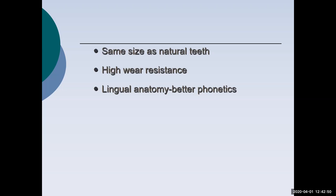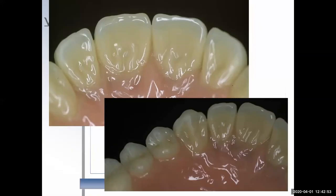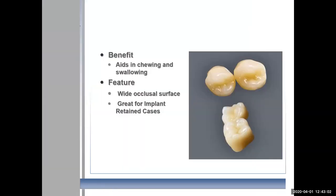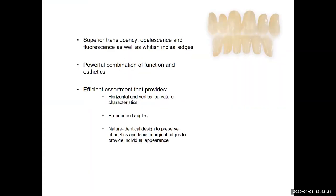I like to utilize lingual anatomy for better phonetics on these cases, since patients sometimes have issues with phonetics especially on upper dentures. We want a wider occlusal space on posterior teeth — great for chewing and grinding — rather than a zero-degree or five-degree tooth. We want something with translucency, opalescence, fluorescence, as well as widest incisal edges for a more natural look and great emergence profile, so the patient can have a beautiful aesthetic, functional case when finished.